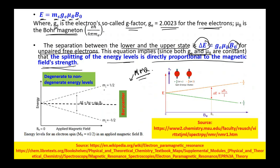These energy levels away from the barycentre are called non-degenerate energy levels. At B = 0, they are called degenerate levels. When a magnetic field is applied, they split into non-degenerate energy levels. As we increase the strength of the magnetic field, delta E increases.